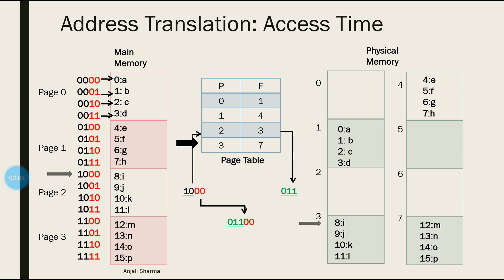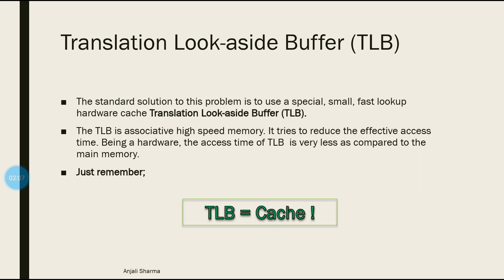What we are trying to do is reduce the excess time in paging. We came to understand that we can make use of a Translation Lookaside Buffer, popularly known as TLB, as a standard solution for this excess time problem. It is a special, small, fast-lookup hardware cache. Just like cache memory, we store frequently accessed items from main memory into the cache so we don't go to main memory every time.